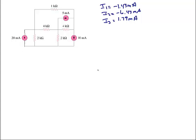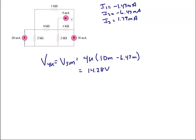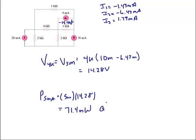Finally, let's find the power associated with the 5 milliamp current source. Since the 5 milliamp current source is in parallel with the 4 kilo-ohm resistor, they have the same voltage: 4K times (10 milliamps minus 6.43 milliamps) equals 14.28 volts, positive on the right and negative on the left. The power for the 5 milliamp current source is 5 milliamps times 14.28 volts equals 71.4 milliwatts absorbed, since the current flows from positive to negative. This concludes lecture 4-1 on special cases of the mesh current method.